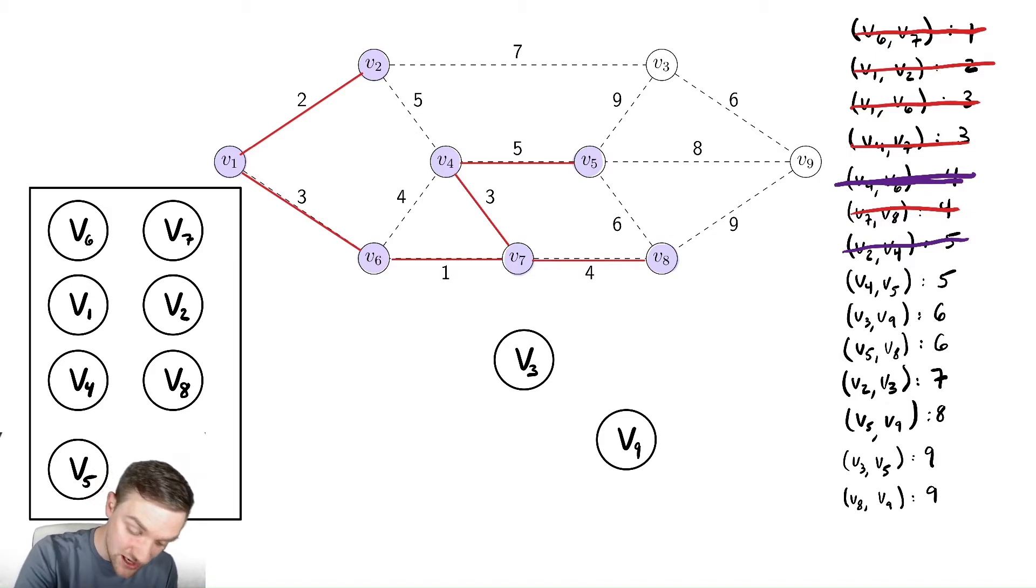Now, let's check the next smallest edge. The next smallest edge is v3, v9. And if we notice, neither v3 nor v9 is currently in the set. So they are going to combine into the same set over here.